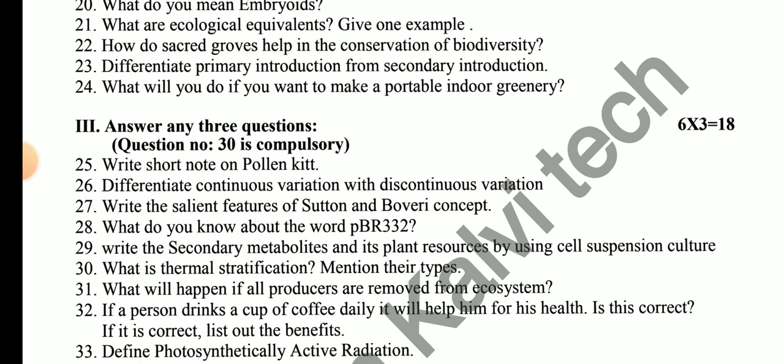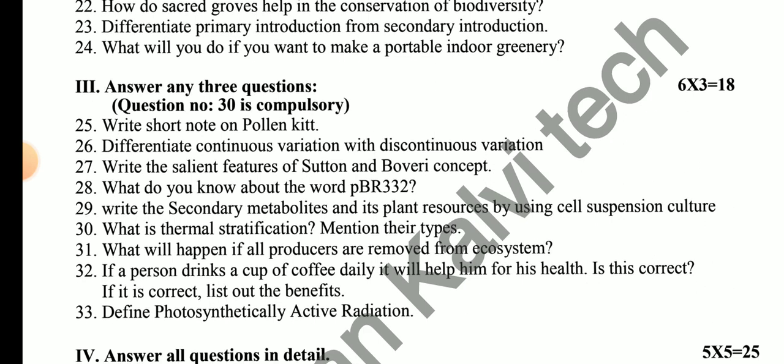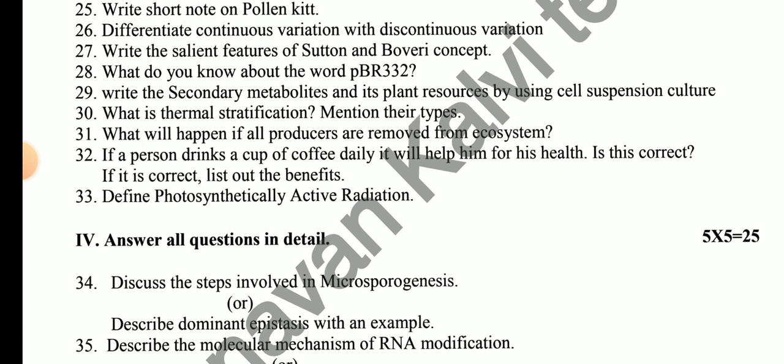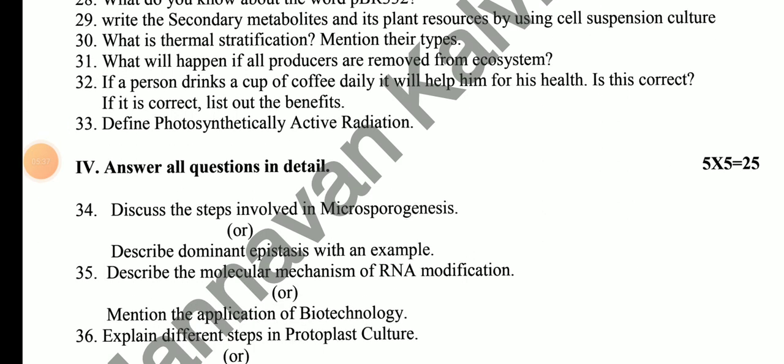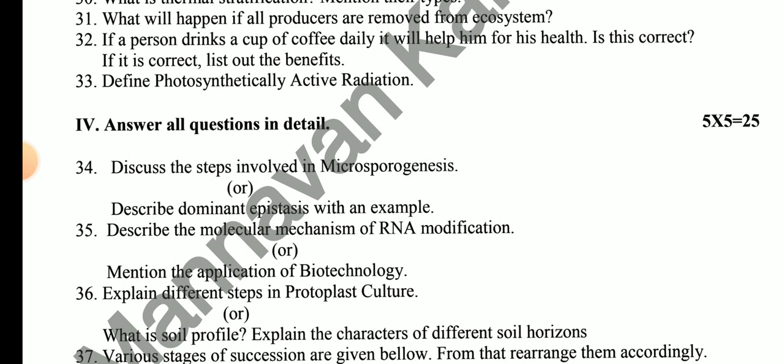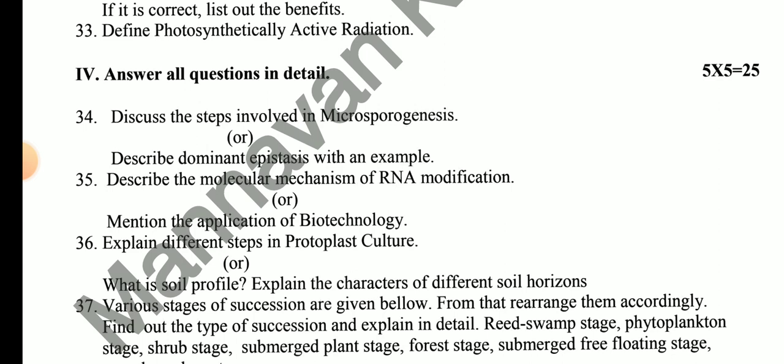How will you make a portable indoor green area? Write a short note on pollen kit. Difference between continuous variation and discontinuous variation. Write the salient features of Darwinism and neo-Darwinism concept. What do you know about PBR? Write the secondary metabolites and plant resources used for suspension culture. What is thermal stratification — mention the types? What will happen if all producers are removed from the ecosystem? Define photosynthetically active radiation. For 5-mark questions: Discuss the steps involved in microsporogenesis. Describe dominant epistasis with an example. Describe the molecular mechanism of parthenocarpy. Mention the applications of biotechnology.